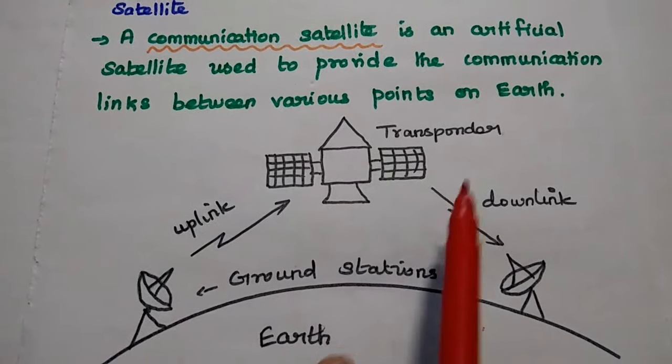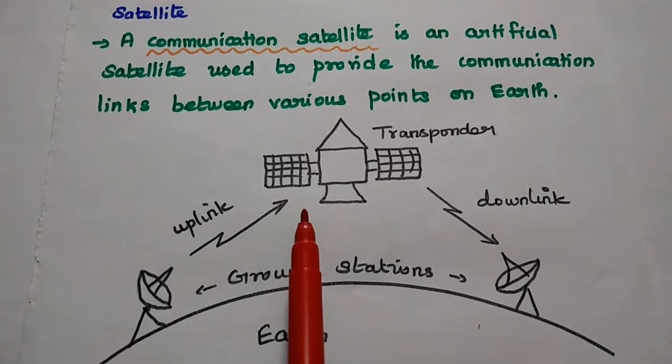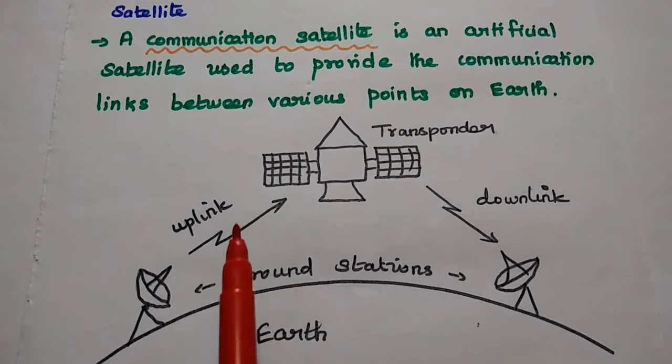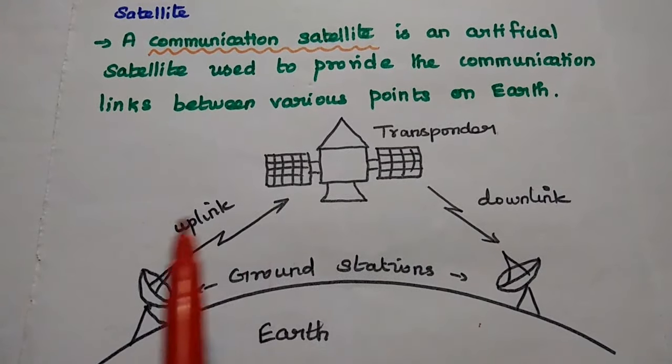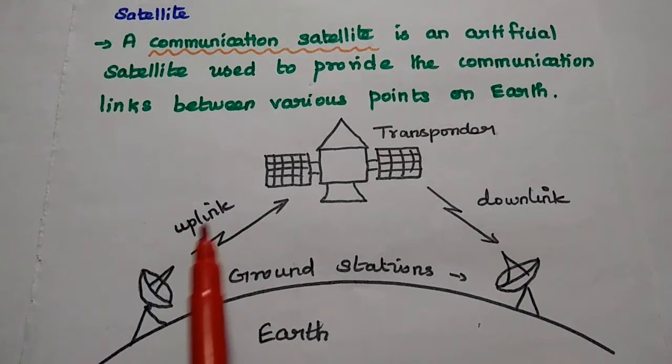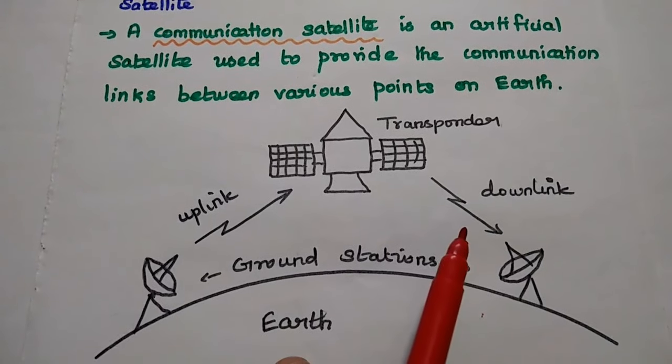This is the basic diagram. Here, the satellite communication consists of three parts: one is uplink, transponder, and downlink.